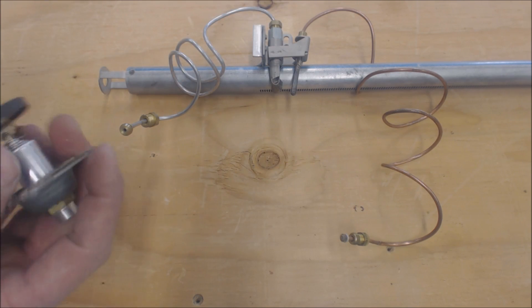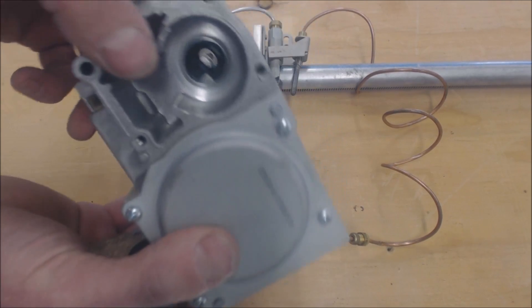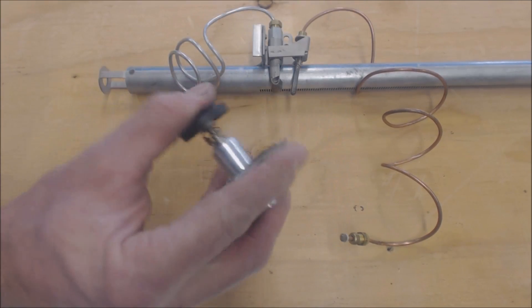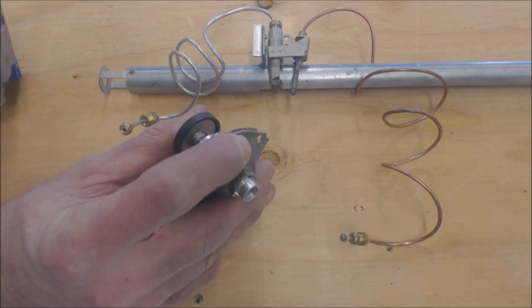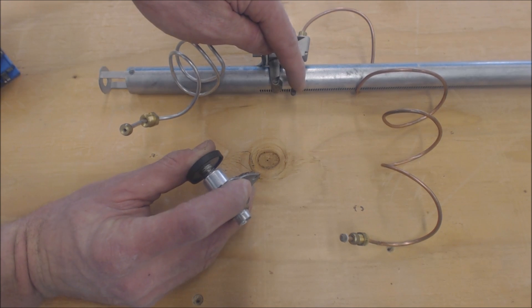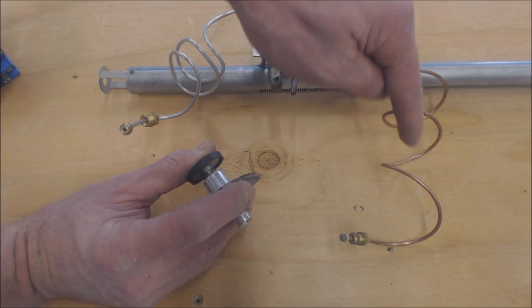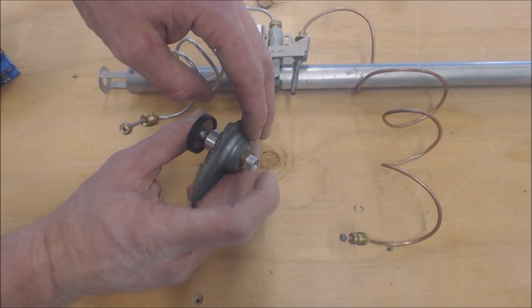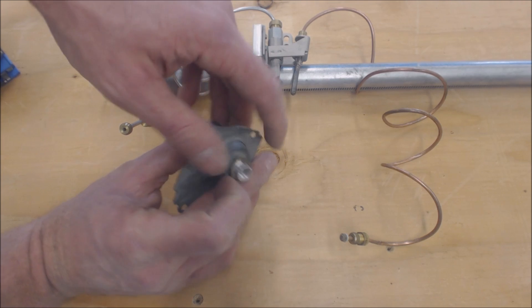When you heat a thermocouple rod up, it actually sends DC millivolts through right over to here and into the back of the solenoid. The solenoid has two connections, straight down in the middle and the side, and the thermocouple has two wires as well.